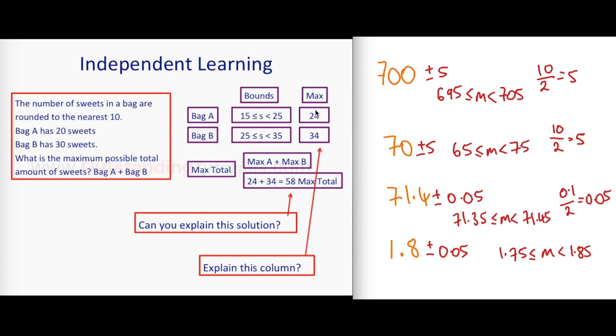If that's been rounded, we find the bounds for A, and there's bounds for B. Then it takes a maximum value of the bounds. Explain this column - how did it get 24 and 34 from the bounds here? Then from those two bounds, it looks like we are doing maximum bag A plus maximum bag B. These two numbers are being added to give 58, not 50. So actually the maximum is 58, not just adding them. Why? Because they've been rounded so the actual value could be more than that.